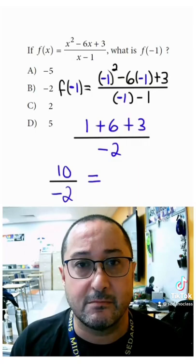And 10 divided by negative 2 is negative 5. So our answer is A, and that's how you do it.